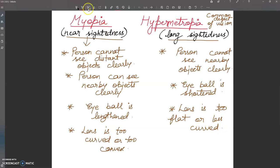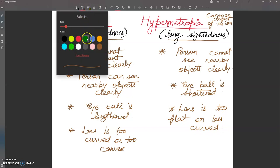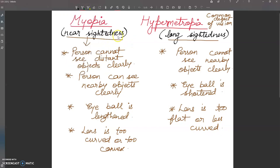The last point is how these defects can be corrected with the help of lenses. For myopia, we use a concave lens to diverge the parallel rays and bring them to focus at the retina.